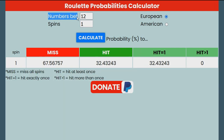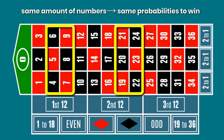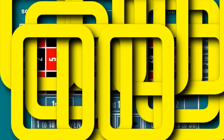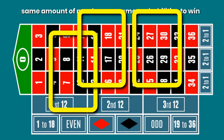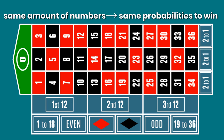An interesting point here is that the statistics are the same for any 12 numbers — either you bet on a dozen, or on two double streets, or on four streets, or on 12 individual numbers straight up. As long as your bet consists of 12 numbers, the probabilities to lose or win in X number of spins is the same.